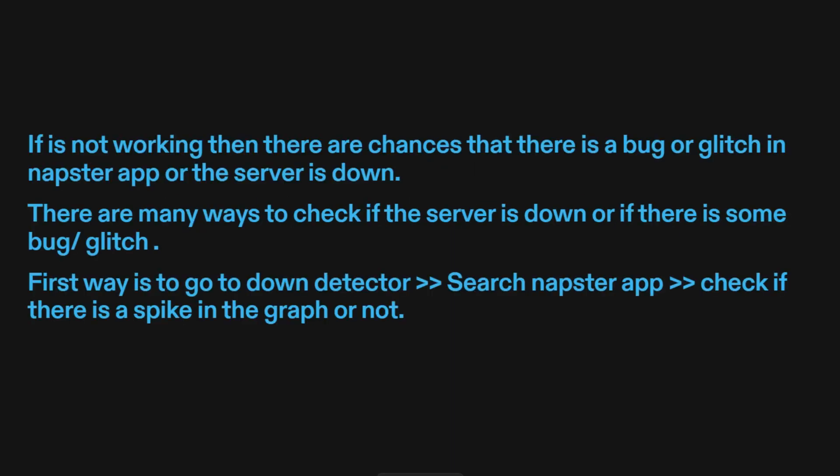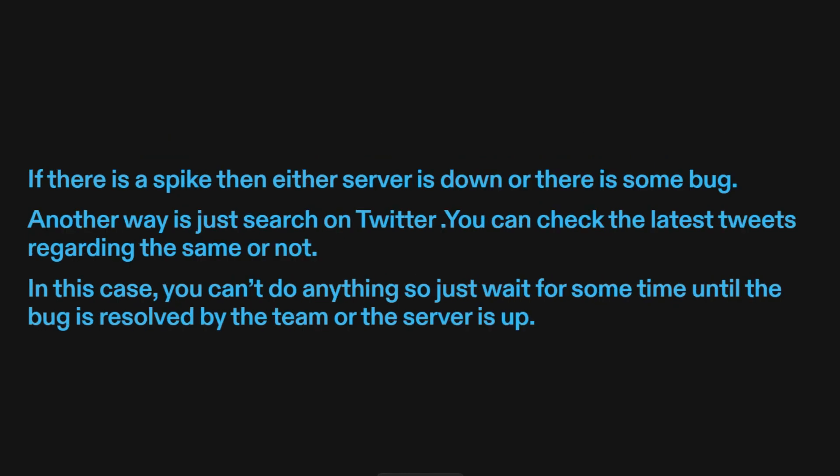Fix 3: Check if the server is down or not. If it's not working, there are chances that there is a bug or glitch in the Napster app, or the server is down. There are many ways to check this. First, go to Down Detector, search Napster app, and check if there is a spike in the graph. If there is a spike, then either the server is down or there is some bug.